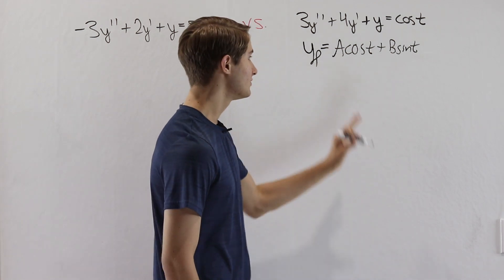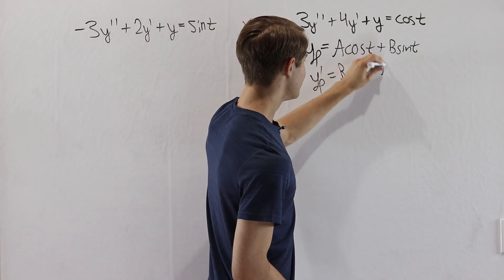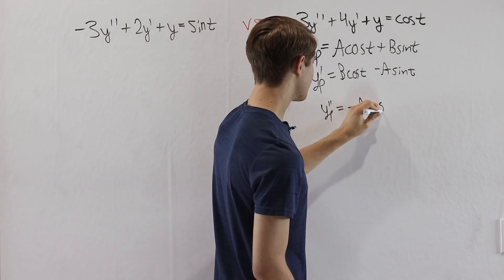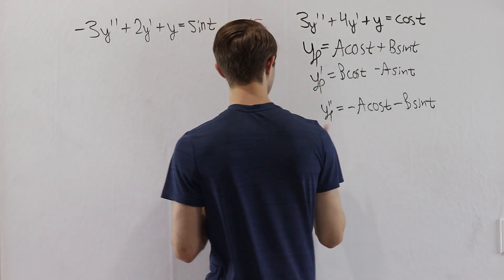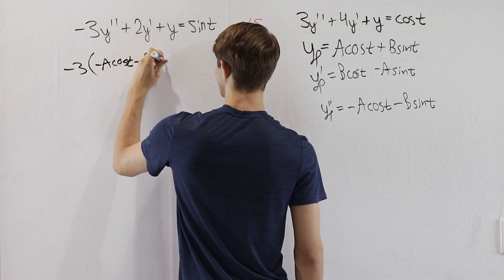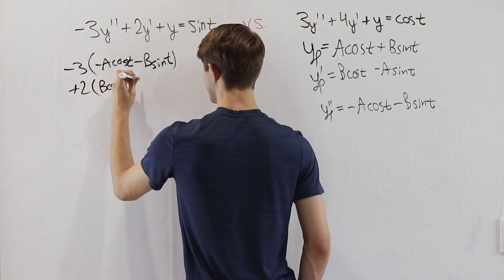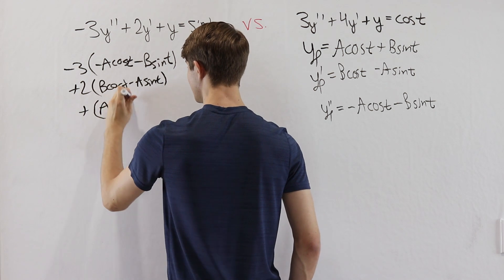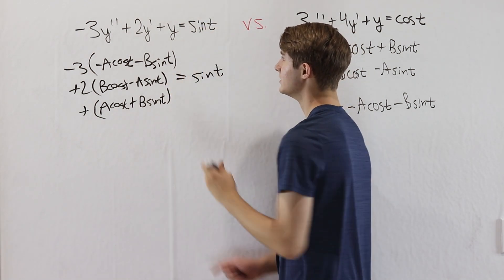Now we just need to differentiate this so we can find the derivatives and plug it in. So yp prime is going to be b cosine t minus a sine t, just flipping these two around. And then yp double prime is going to be negative a cosine t minus b sine t. We are ready to plug all of this into our differential equation. Starting out with negative 3y double prime: negative a cosine t minus b sine t. Then we have plus 2y prime: b cosine t minus a sine t. And finally, plus y: a cosine t plus b sine t. And we know all of this is going to be equal to sine t on the right side.